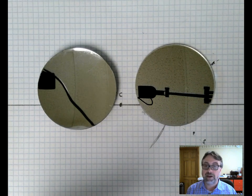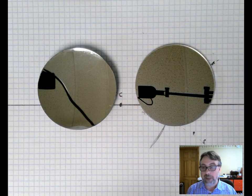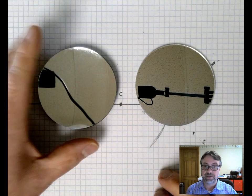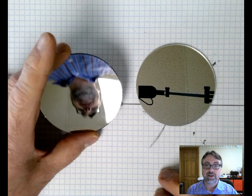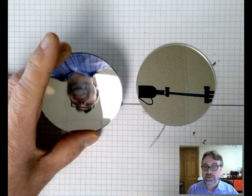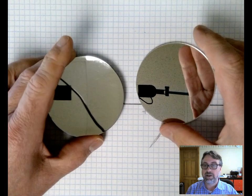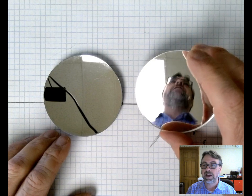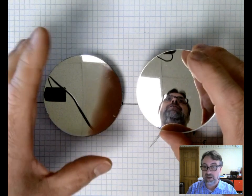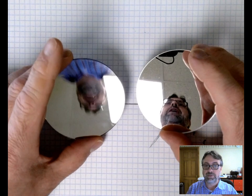Now these two mirrors look pretty identical on the paper but if I reflect myself in them as I tilt the concave mirror you see my image is inverted. But if I tilt the convex mirror you see my image is not inverted. If I tilt both at the same time you can compare.